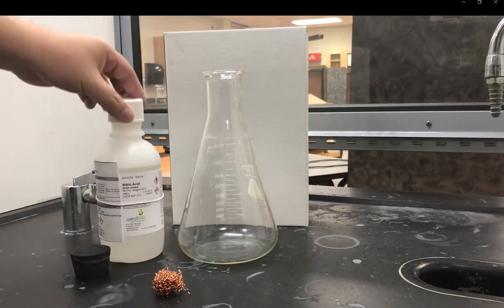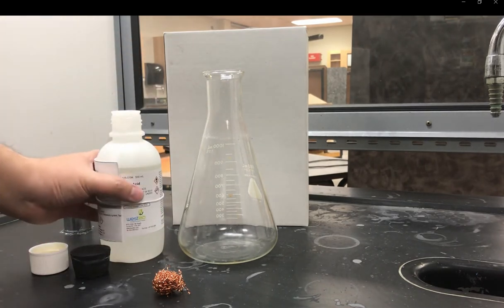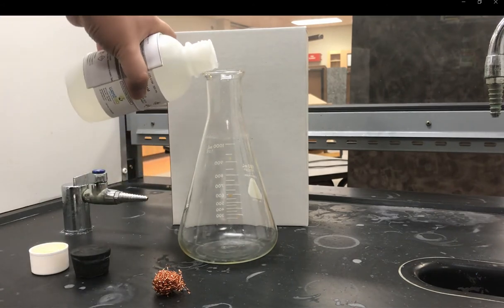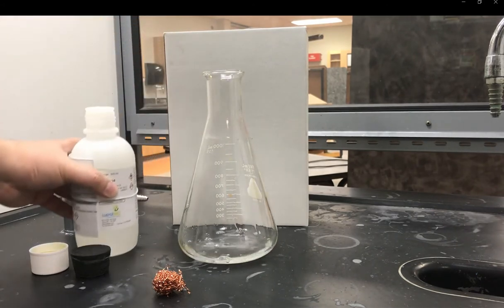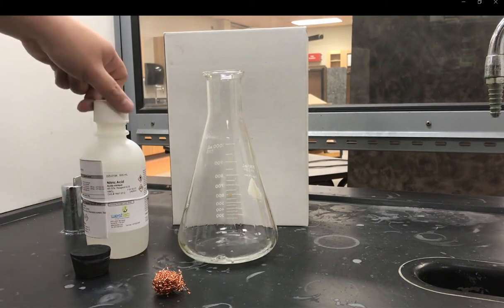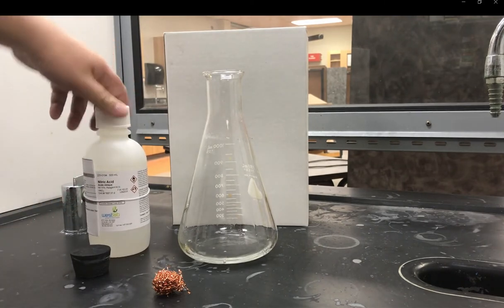it separate from all the other acids. I'm going to pour a little bit of acid into this Erlenmeyer flask. Behind the Erlenmeyer flask there's a white cardboard box, it's just meant so that you can see the gas a little bit more clearly.